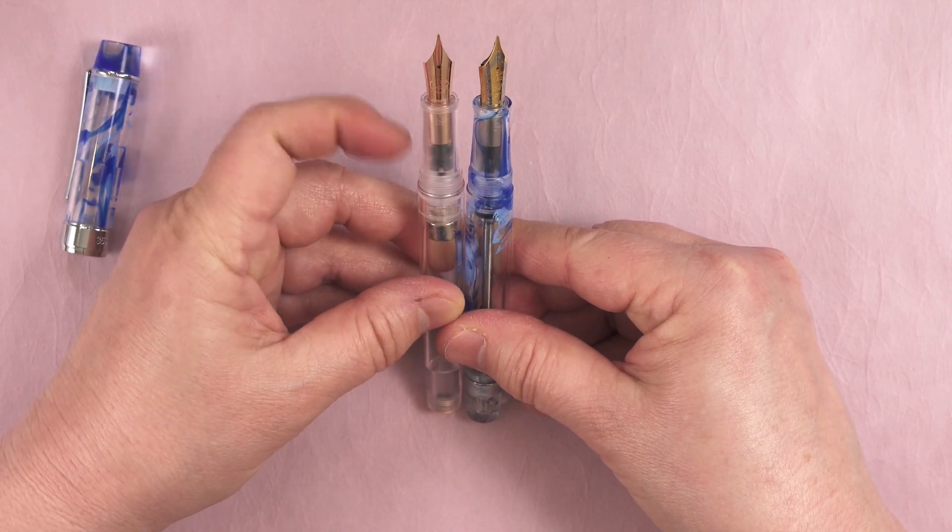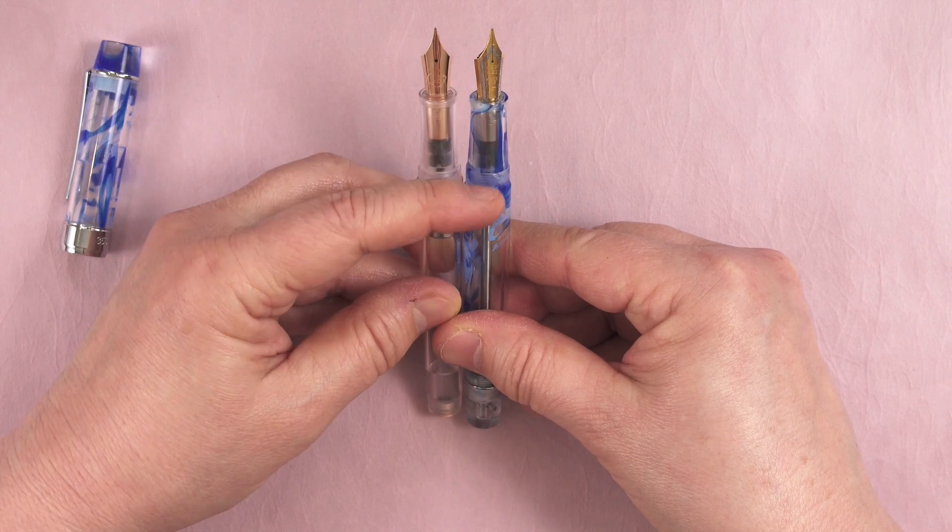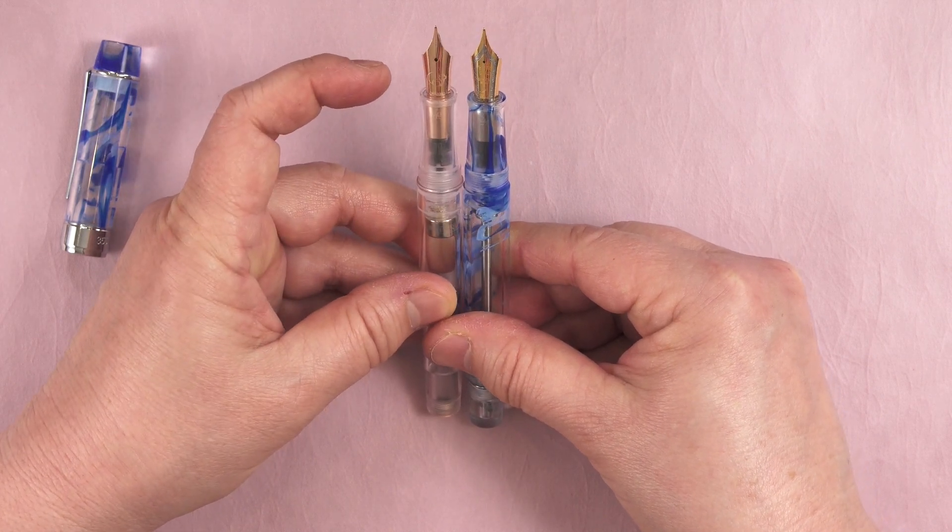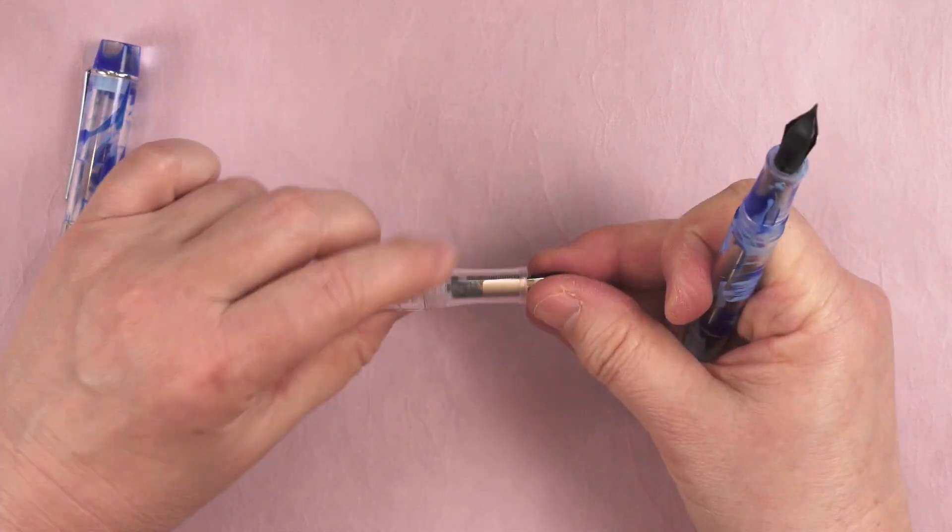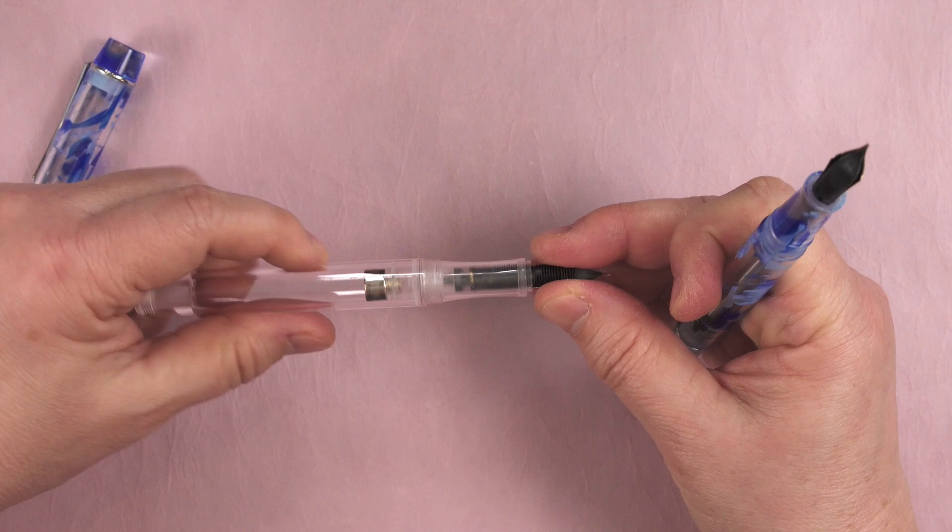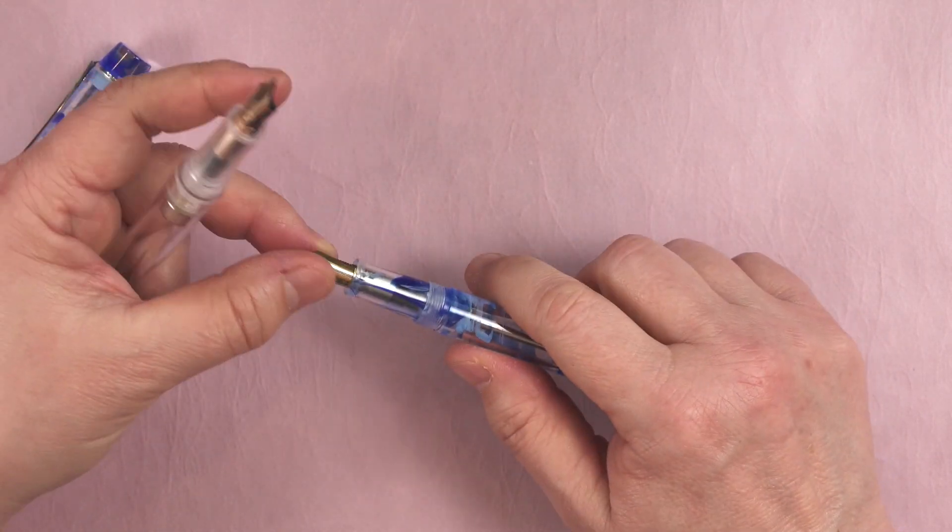Uncapped, they look and feel similar except for the section on the 492 is a little bit concave. The 492 has a nib unit and the 355 is just friction fit into the section.